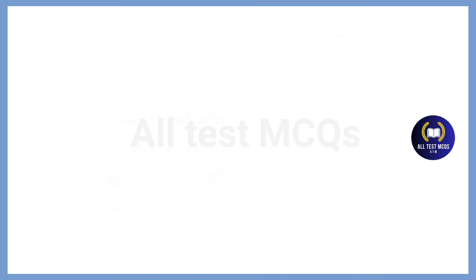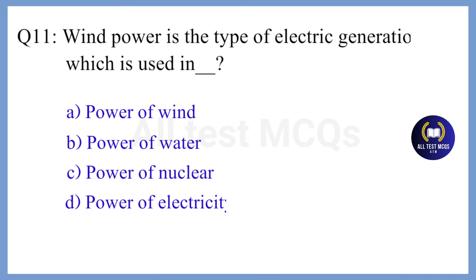Question 11. Wind power is the type of electric generation which is used in — the correct answer is Option A.